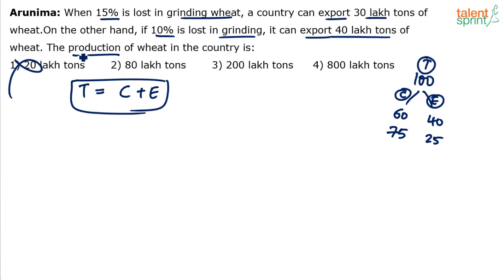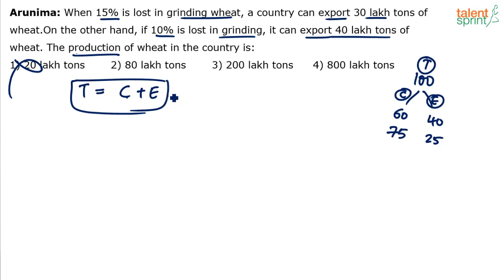What is the production of wheat in that country? Production means the overall production of wheat. It is being exported after grinding. So there are things you need to understand. Production is the total production of wheat, in which something is also lost in grinding. So basically there are three components: consumption plus export plus the loss in grinding. That is the actual idea.